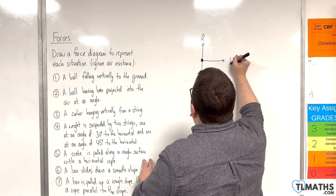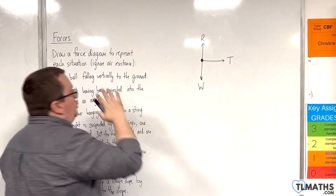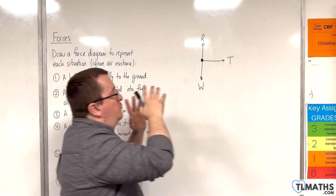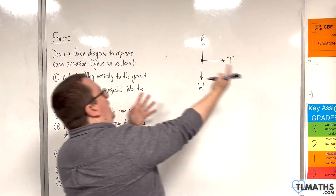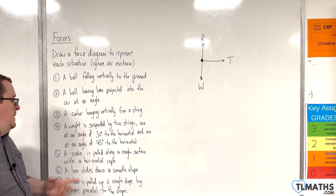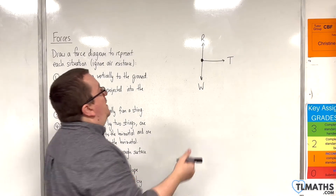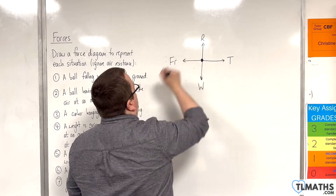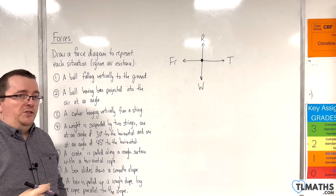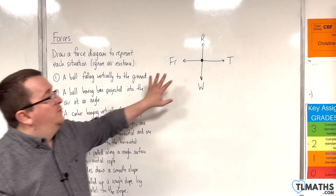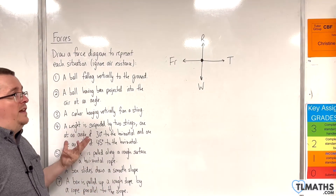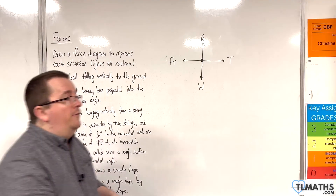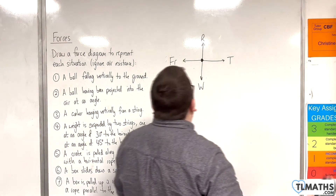There will be tension in the rope, and I've chosen going to the right as the direction of travel — you can equally have it pointing to the left. It's a rough surface, so there will be friction working against the direction of motion. This force diagram is identical to the one we drew in the previous video, where we were looking at the book going across the rough tabletop.